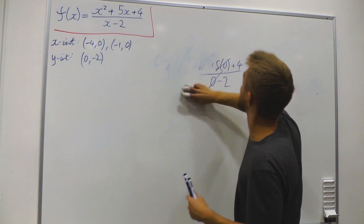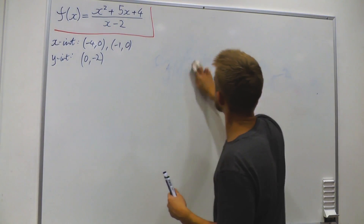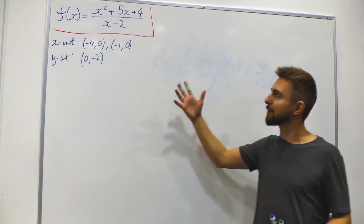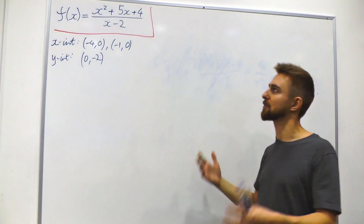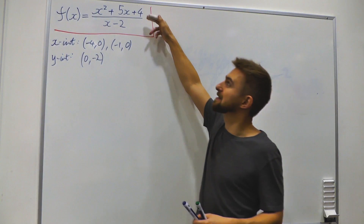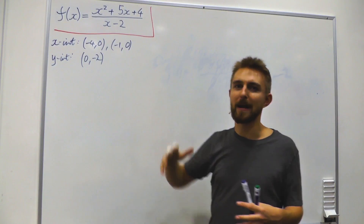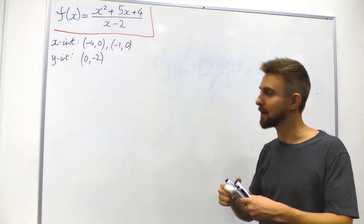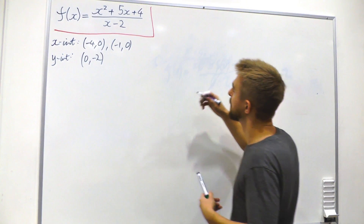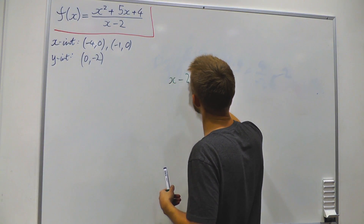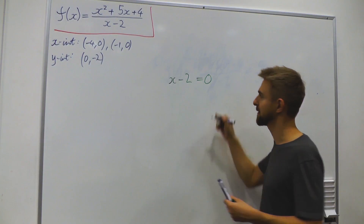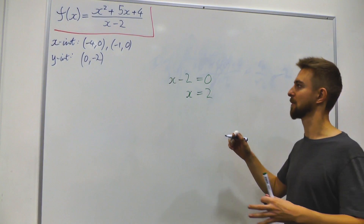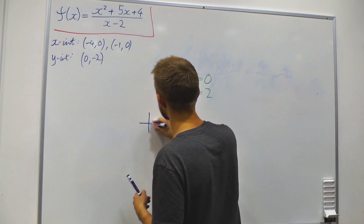Very quickly we've already found three important things about our function. The next thing to look at are asymptotes — vertical, slant, and horizontal. Because this is in polynomial fractional form, anywhere the denominator equals 0 we'll have a vertical asymptote. Setting x minus 2 = 0 gives us x = 2, so we have a vertical asymptote at x = 2.